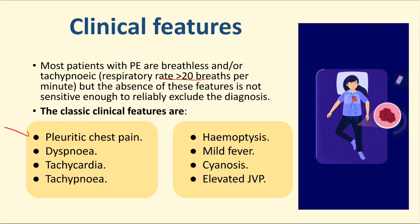Patients have increasing chest pain with breathing, shortness of breath, tachypnea, tachycardia, and hemoptysis if the patient has ischemia of the lung. Other features include mild fever, cyanosis, and elevated JVP. Elevated JVP is a bad sign — it means that there is a large thrombus.